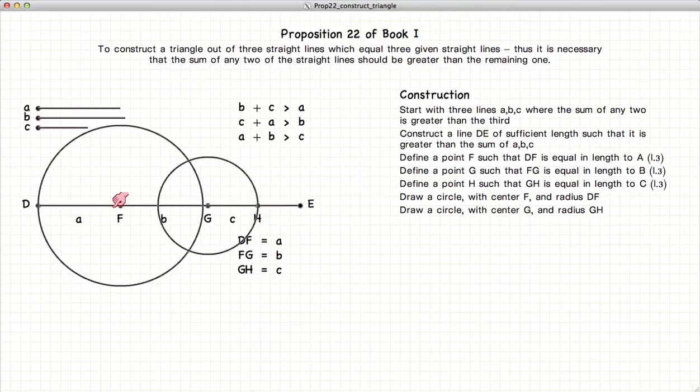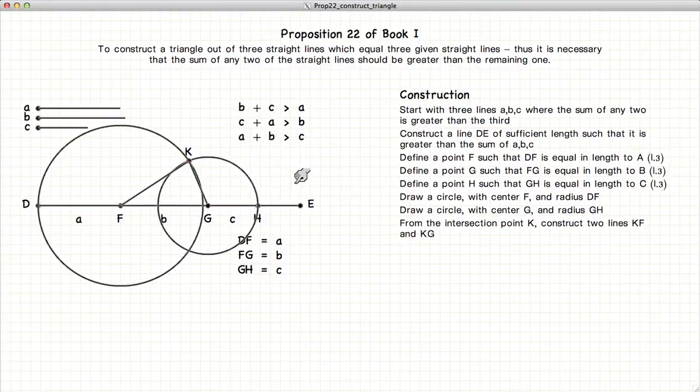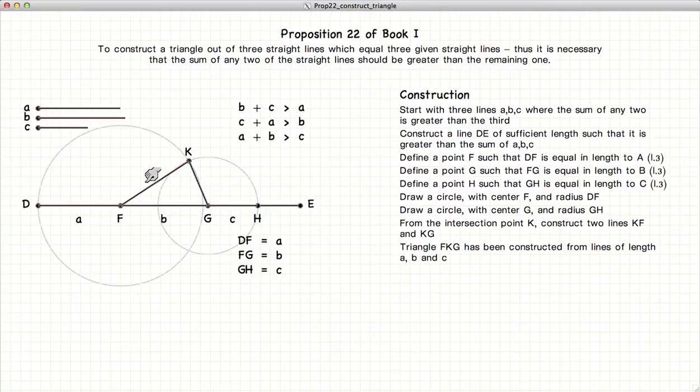And now if we join the points F, the intersection of the two circles, and G, we have a triangle where FK is equal to A, KG is equal to C, and FG is equal to B. So we have constructed our triangle from these three straight lines.